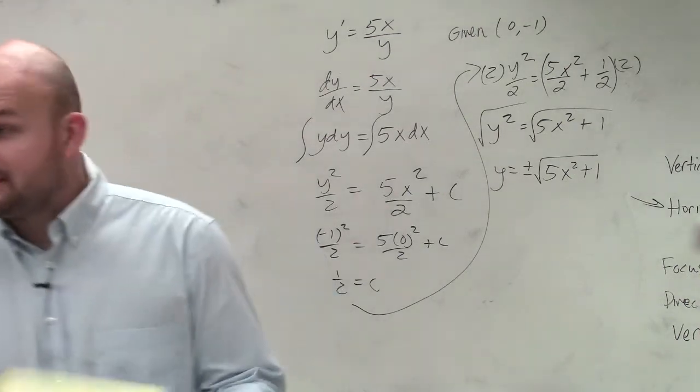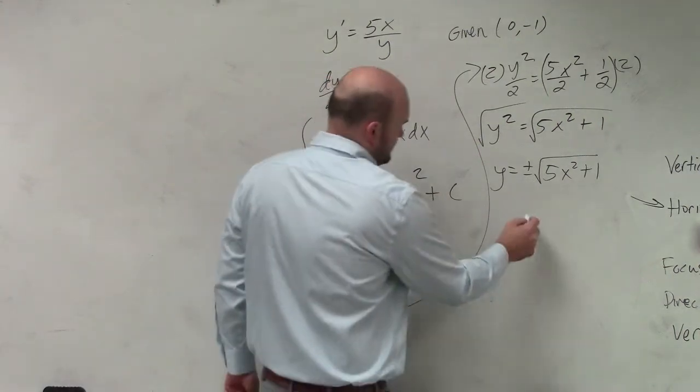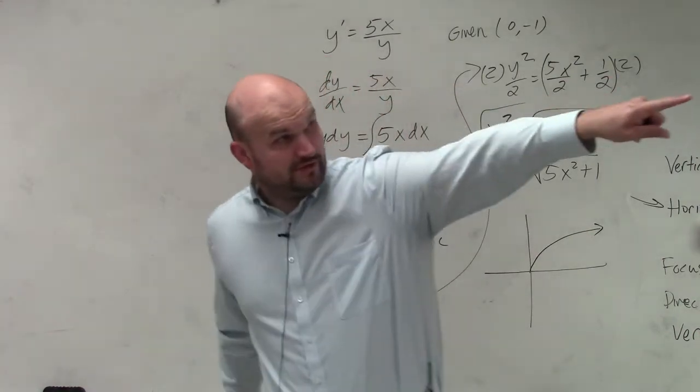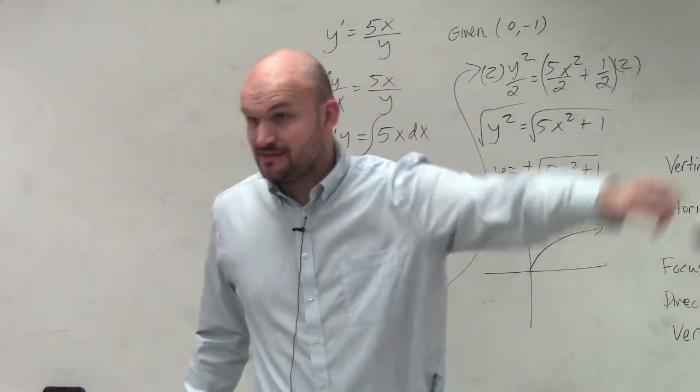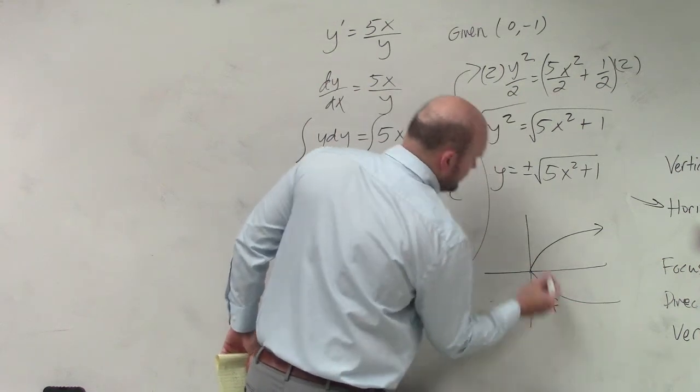But we're looking for a particular solution. So we've got to see which solution actually makes sense. And if you guys remember, the square root function, square root graph, written right up there, square root of x looks like that. So negative square root of x would look like that. Correct?